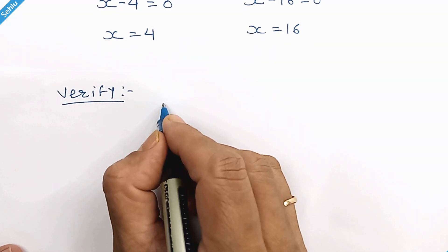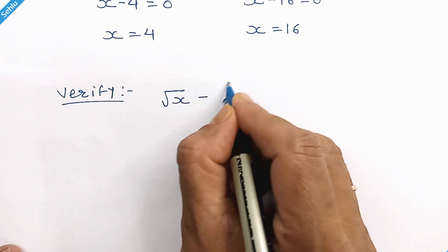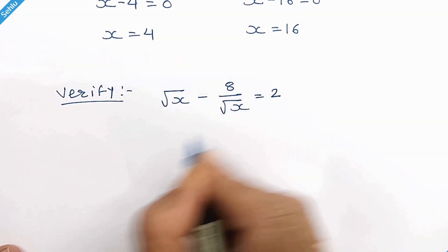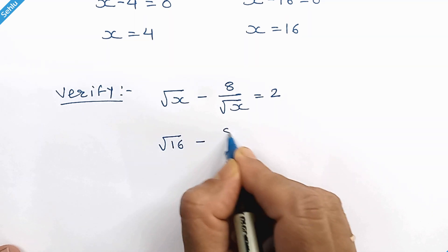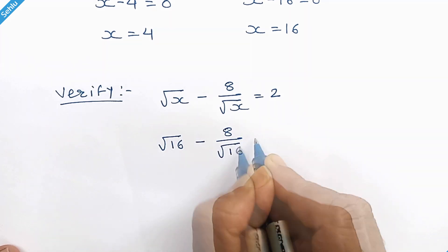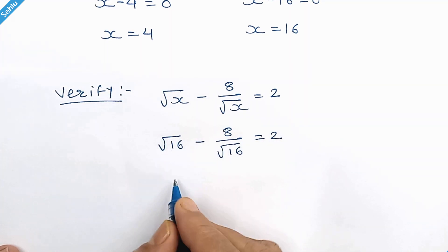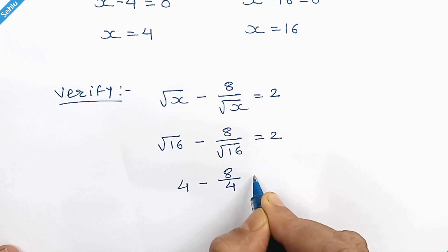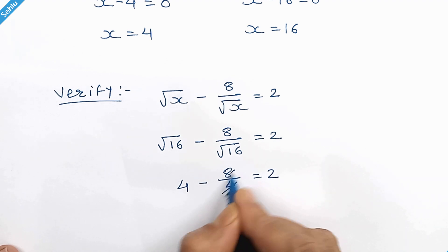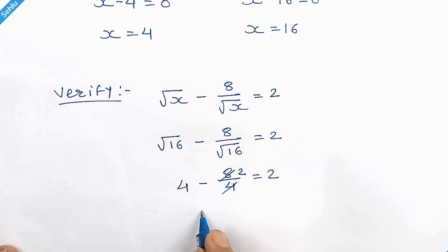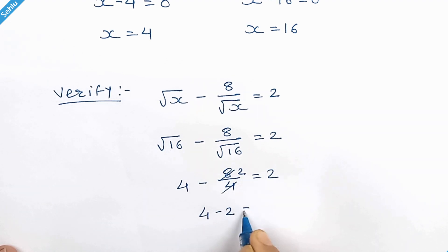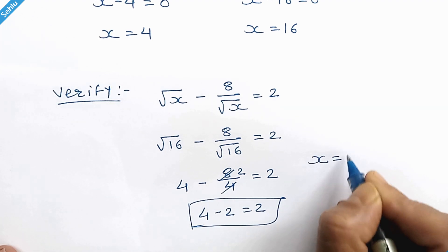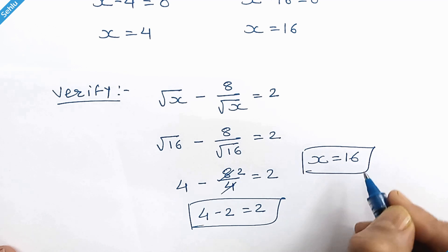Let's take x equals 16. Square root of 16 is 4, and 4 times 2 is 8. So we have 4 minus 2 equals 2, which checks out. Therefore x equals 16 is correct.